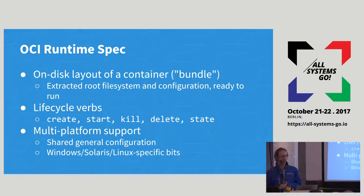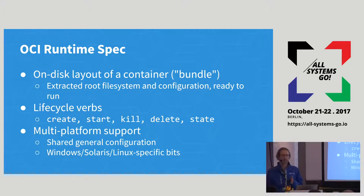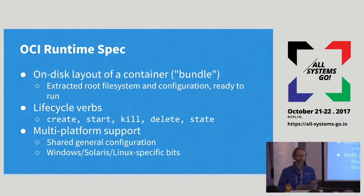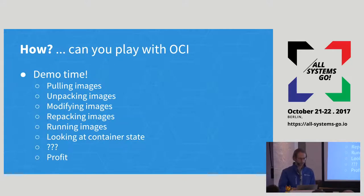The runtime spec — where runC is the default implementation — defines what a container looks like on disk after you've pulled it down from the internet, verified the signature, and extracted it. It also defines what it means to start the container, to stop it, and what it means to constrain it with different cgroups or process isolation. It also defines a way to expose state for containers that are running on disk, and I'll show you that in the demo.